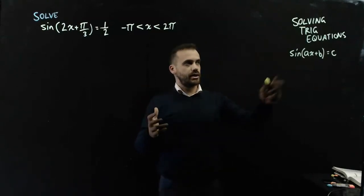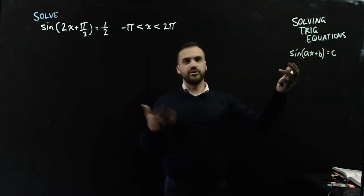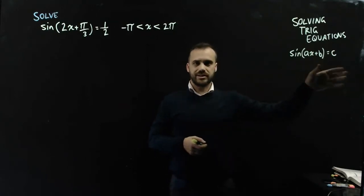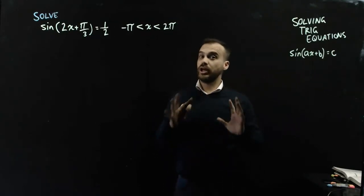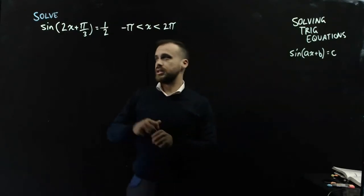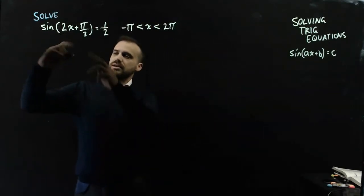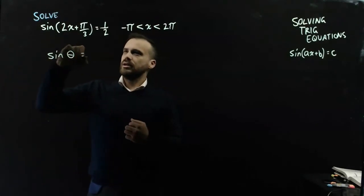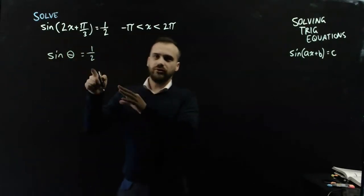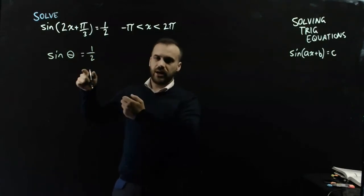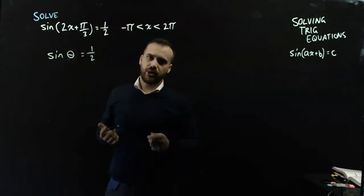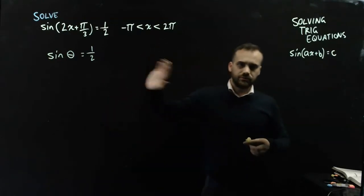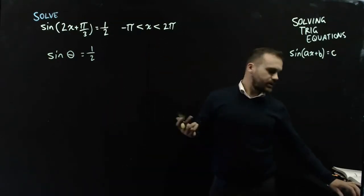Alright, so we're solving a trig equation here of a particular form: sine or cosine or tangent of ax plus b equals c. Now, the general idea here is that I'm going to let that thing equal something else, just say let it equal theta, and then solve that, and then convert it back to 2x plus pi on 3. But there is a little bit of a wrinkle in that, so I'm going to erase that and then we'll get started.